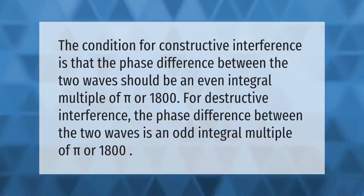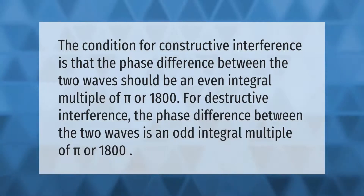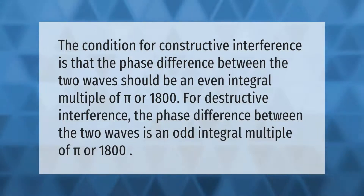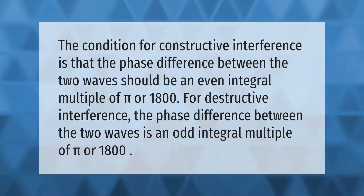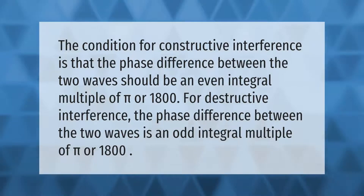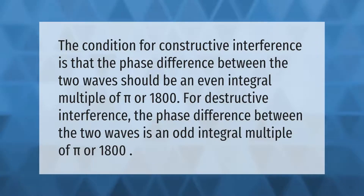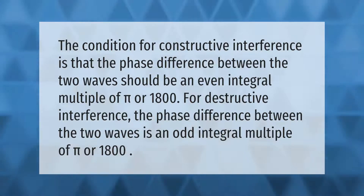The condition for constructive interference is that the phase difference between the two waves should be an even integral multiple of π (or 180°). For destructive interference, the phase difference between the two waves is an odd integral multiple of π (or 180°).